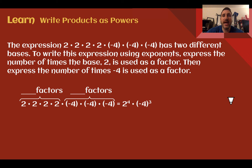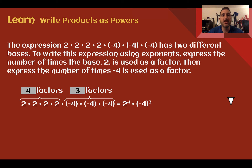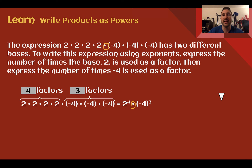Sometimes we'll see expressions where it might have more than one number, but we can still express it using exponents by putting the things that are alike together. So we have 2 times 2 times 2 times 2 — that's 4 factors of 2 — and then negative 4 times negative 4 times negative 4, so 3 factors of negative 4. Simplified, we would have 2 to the 4th power and negative 4 to the 3rd power, and they were multiplied together, so we can still show they're multiplied together in our final simplified expression.